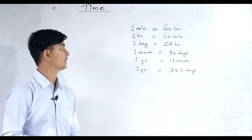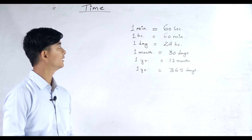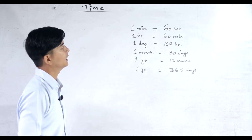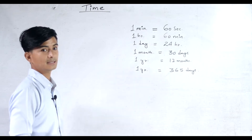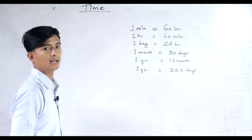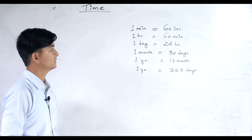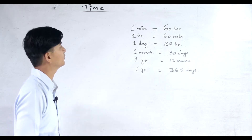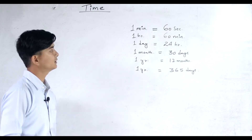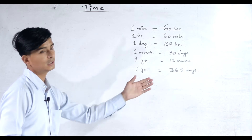These are the things you have to remember. One minute is 60 seconds — on a watch, the small hand tells the hour and the bigger hand is called the minute hand. One hour is 60 minutes, 60 seconds make one minute, 24 hours make one day, one month has 30 days, one year has 12 months or 365 days.